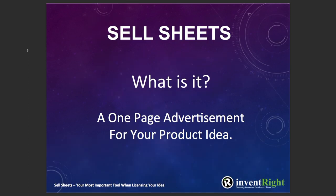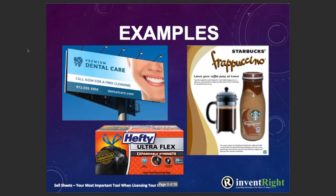What is a sell sheet? It's a one-page advertisement for your product idea. We've been advertised to our entire life — we see advertisements all the time. Here's an example of a billboard when you're driving down the freeway, product packaging, and a sell sheet. When you're driving down the freeway, you need to get the advertising piece very, very quickly — even faster than six to ten seconds. So right here it's a call to action: 'Call now for a free cleaning' — phone number or email. Very direct. It's not that much different when you're emailing companies.